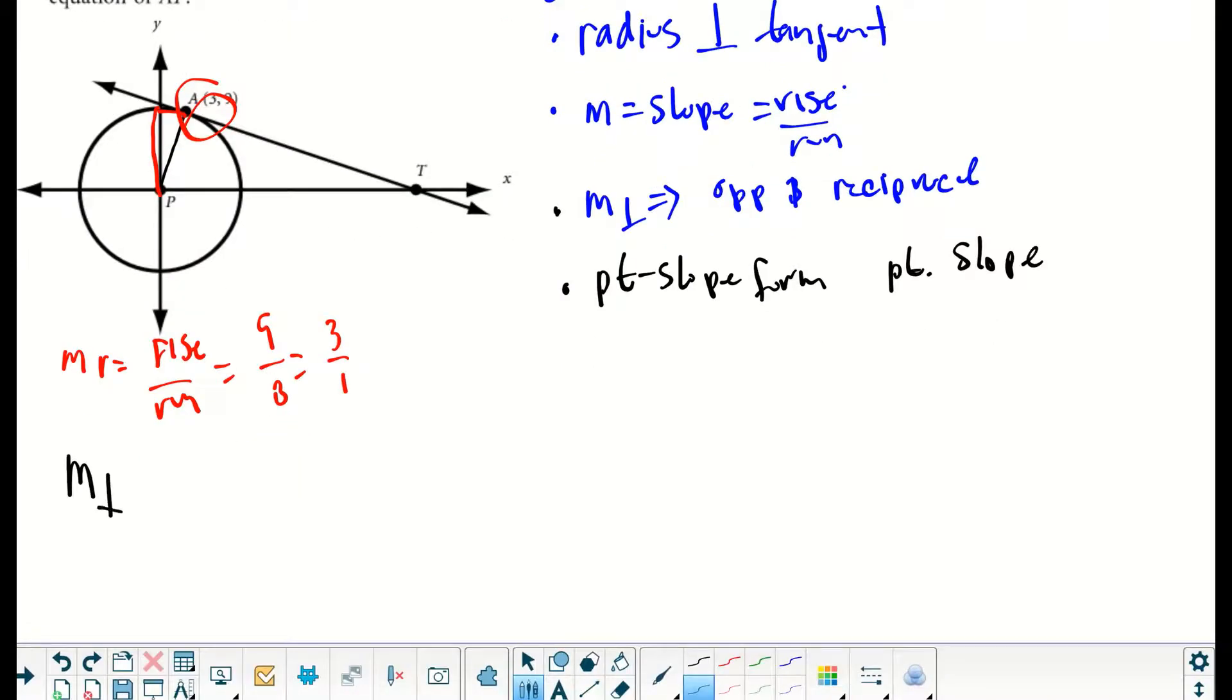Slope perpendicular to the radius would be opposite and reciprocal, so instead of three over one, it's negative one-third. The point that we're going to use is point A. Point A's coordinates are at (3, 9).